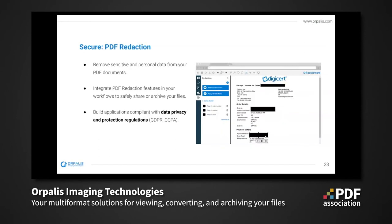Data privacy is now one of the most important subjects for all organizations. Since 2018, many regulations like the GDPR have appeared all over the world. It is crucial to be able to remove sensitive and personal data from your PDF documents in an absolutely definitive way. Once a document is redacted, you cannot retrieve the information below the redaction marks. We provide secured PDF redaction features that you can use through our apps or integrate into your workflows to share or archive your files safely.